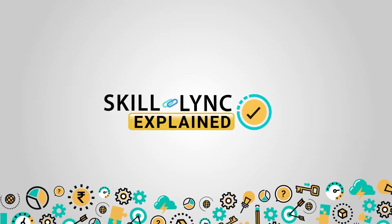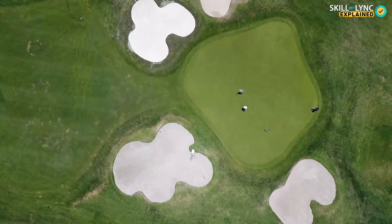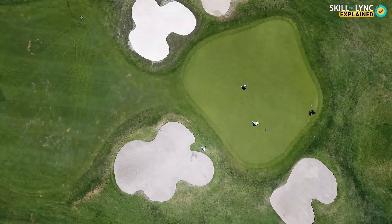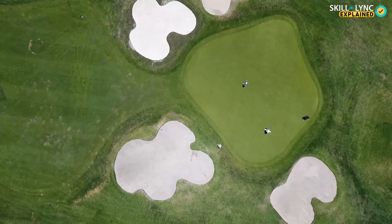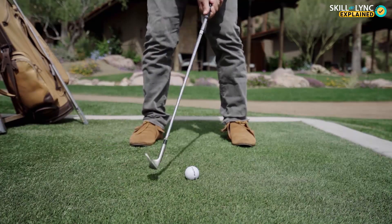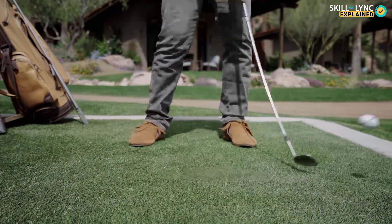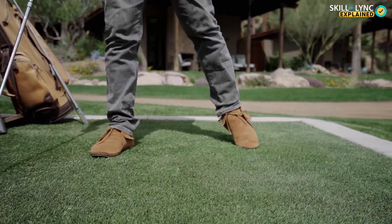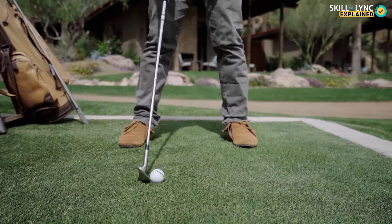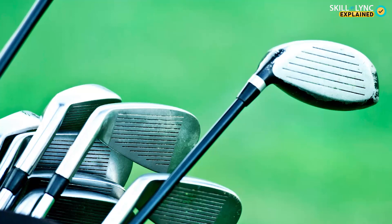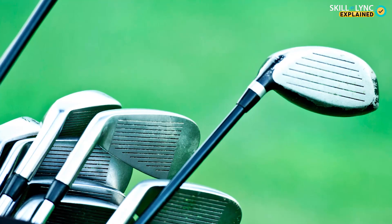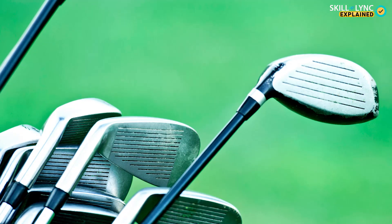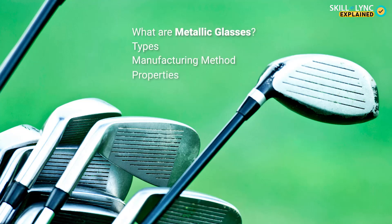Hey guys, welcome to Skill Link. Are you interested in playing golf? Well, it's okay if you aren't, but you would have definitely seen the golf club. Other than wood, iron, and steel alloys, some fancy golf clubs are made of metallic glasses for a particular reason you might not know why. This video is about a specific engineering material called metallic glasses. We will be discussing what metallic glasses are, their types, how they are made, their properties, and applications.